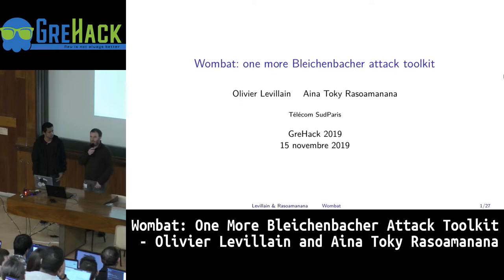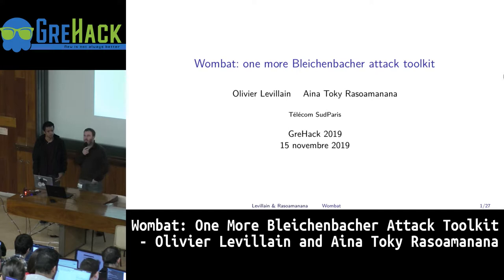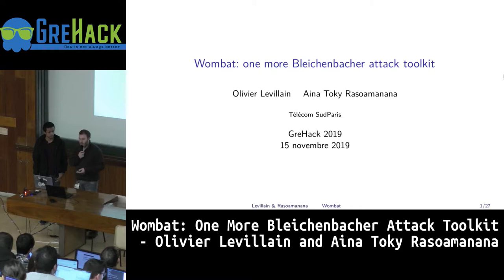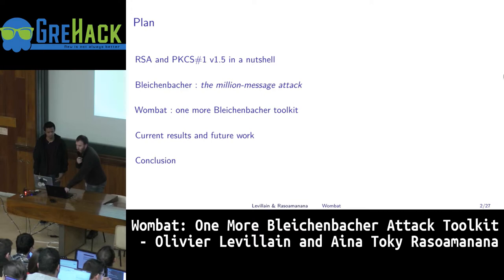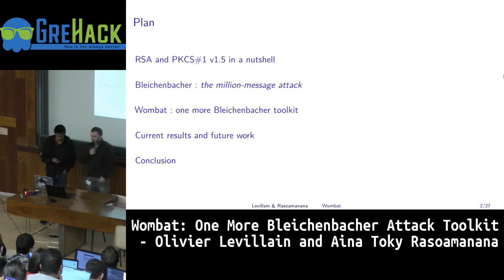I'm Olivier Le Villain, and I'm with Aina Tokier-Razor-Manana. We work at Télécom Sud Paris. I'm an assistant professor there, and Aina worked on this during his internship. He's now a PhD student with me at Télécom Sud Paris. We are going to speak about RSA and an attack that you might already know of, Bleichenbacher, and we try to write some code about this attack. I will let Aina speak a little about RSA and Bleichenbacher.